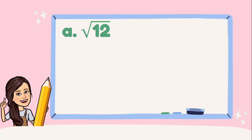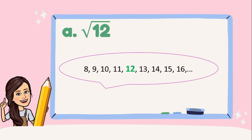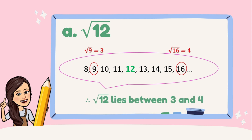Let's have some examples. First, square root of 12. Is 12 a perfect square integer? Definitely not. So, what we're going to do is to find two perfect square integers where 12 is in between of them. By looking at this illustration, which among these numbers are the two perfect square integers where 12 is in between of them? We have 9 and 16. Taking the square root of these numbers, the principal root of √9 is 3 and the principal root of √16 is 4. Thus, √12 lies between 3 and 4.